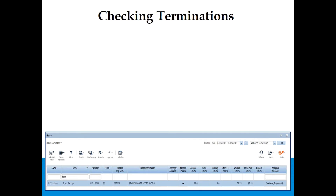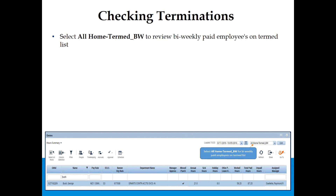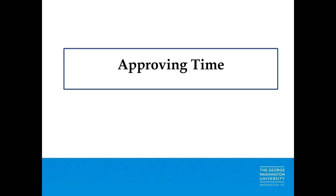Terminations: Select All Home Term Bi-Weekly for bi-weekly paid employees on the term list. Review hours and approve. If an employee worked past their termination date, submit a rehire request to the appropriate area — such as Student Employment or your HRSD representative — to ensure prompt payment of hours worked. The employee must be hired into a position for payment.